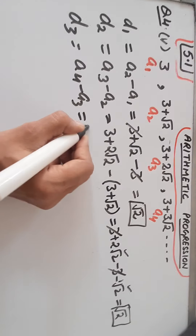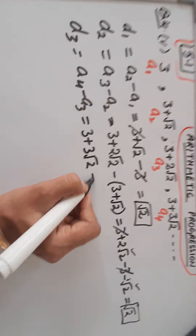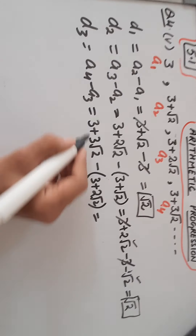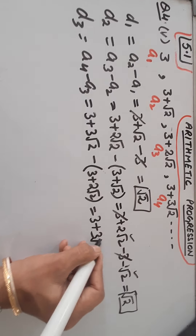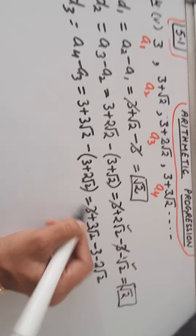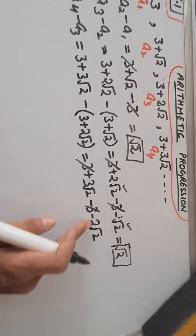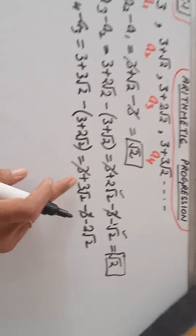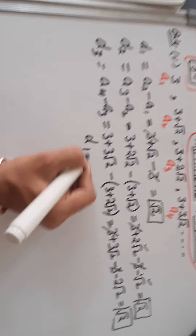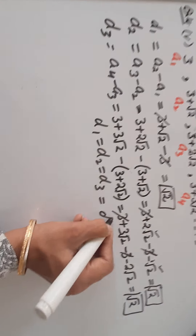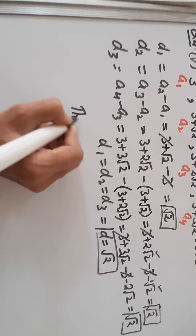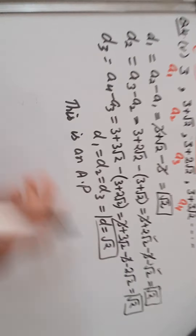Now similarly, A4 is 3 plus 3 root 2, then a negative sign, then A3 in the bracket: 3 plus 2 root 2. Opening the bracket: 3 plus 3 root 2, then minus 3, minus 2 root 2. Again opposite signs cancel out, and 3 root 2 minus 2 root 2: these are like terms with the same square root, so 3 minus 2 gives 1 root 2, which is root 2. All differences are the same, so D1 equals D2 equals D3 equals root 2. Hence this is an AP.